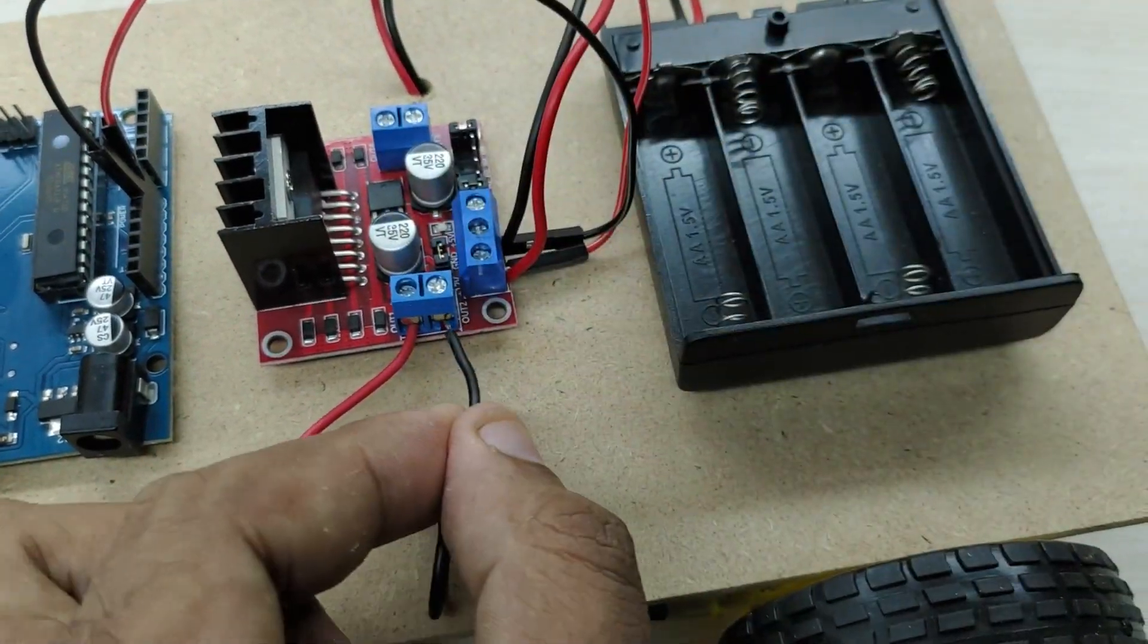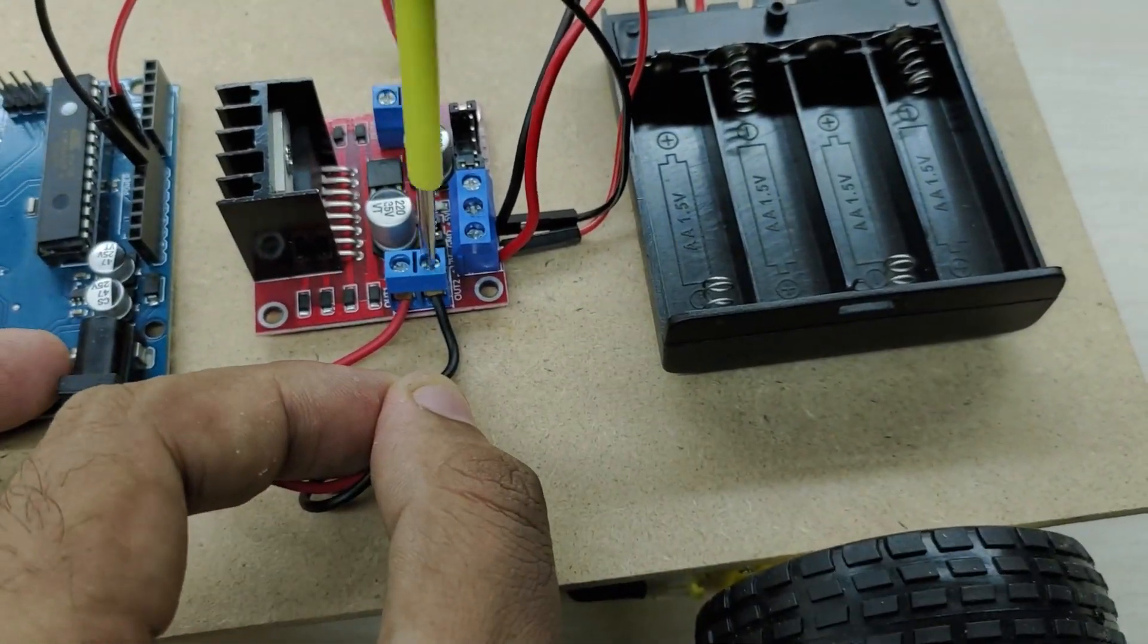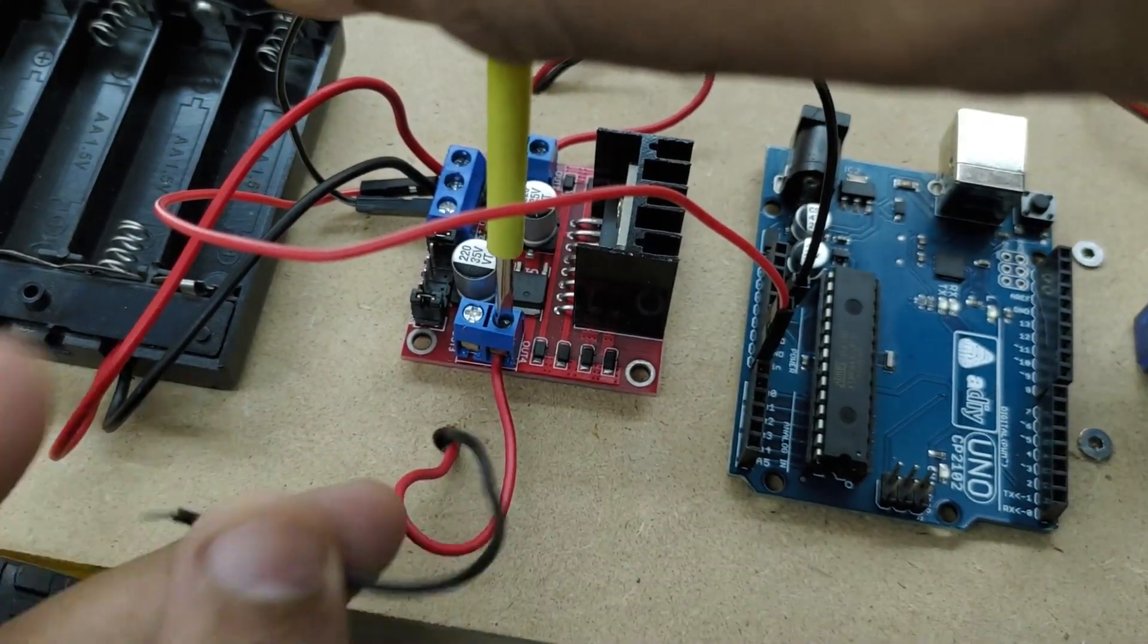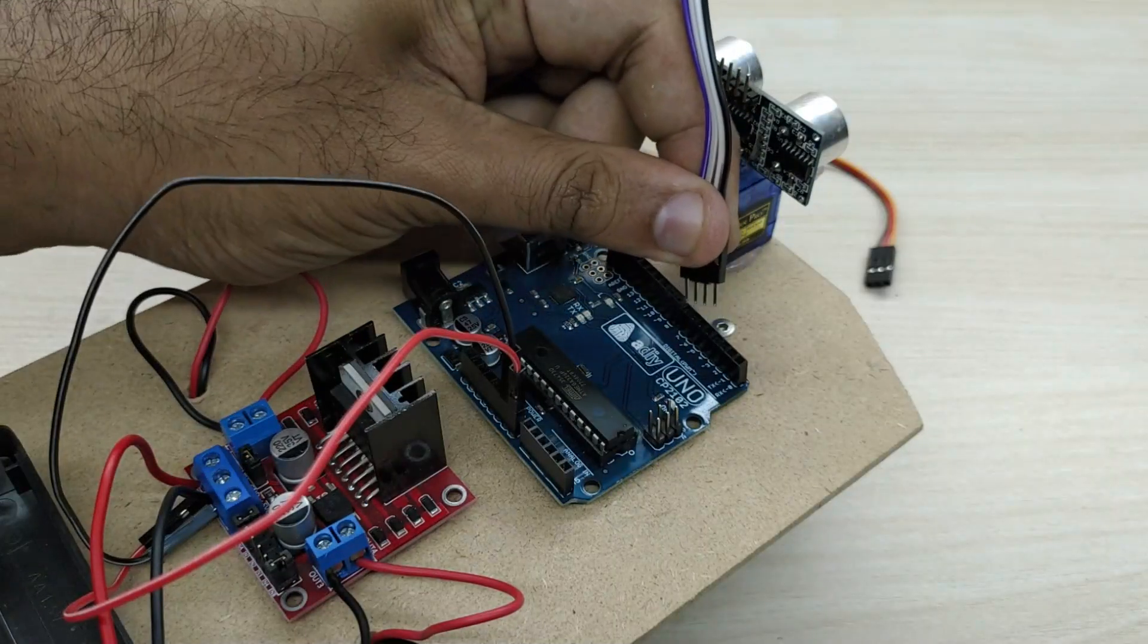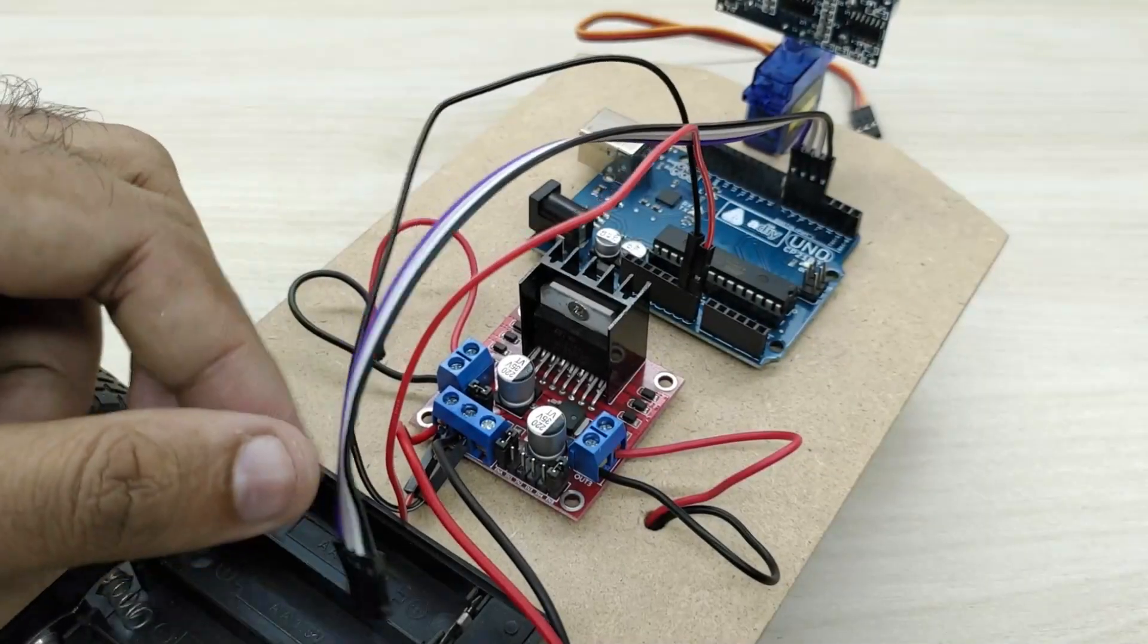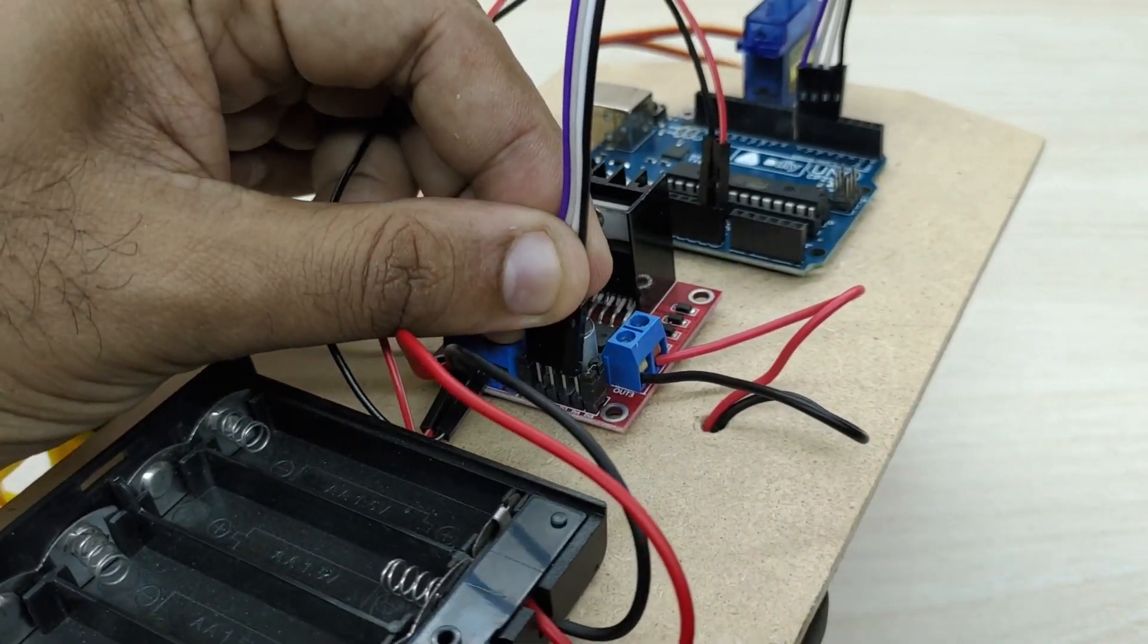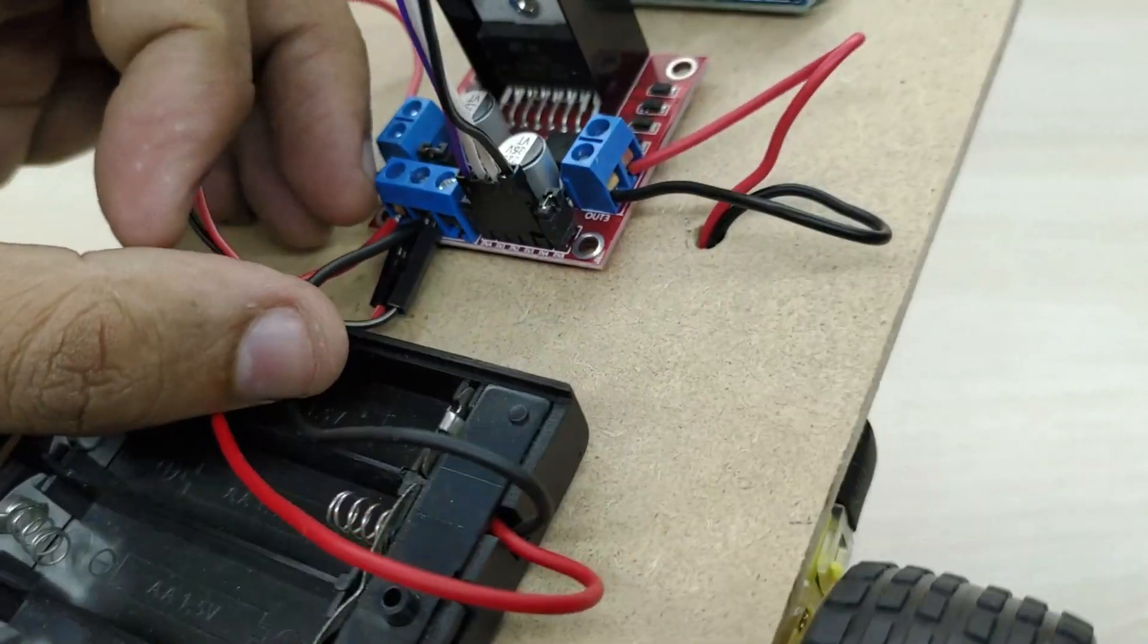Now, connect the electrical wires from both the motors to the motor driver module as shown. Take four jumper wires and connect them to pin numbers 4, 5, 6 and 7. Connect the other end to the motor direction control pins of the motor driver board, as shown.